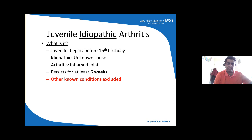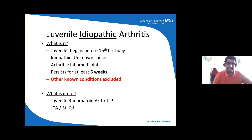Very important points: it has to persist for at least six weeks and other known conditions must be excluded. It seems a relatively easy job to exclude other known conditions, but sometimes it can be quite tricky. What JIA is not: it is not juvenile rheumatoid arthritis, it is not juvenile chronic arthritis, and it is definitely not Still's disease.